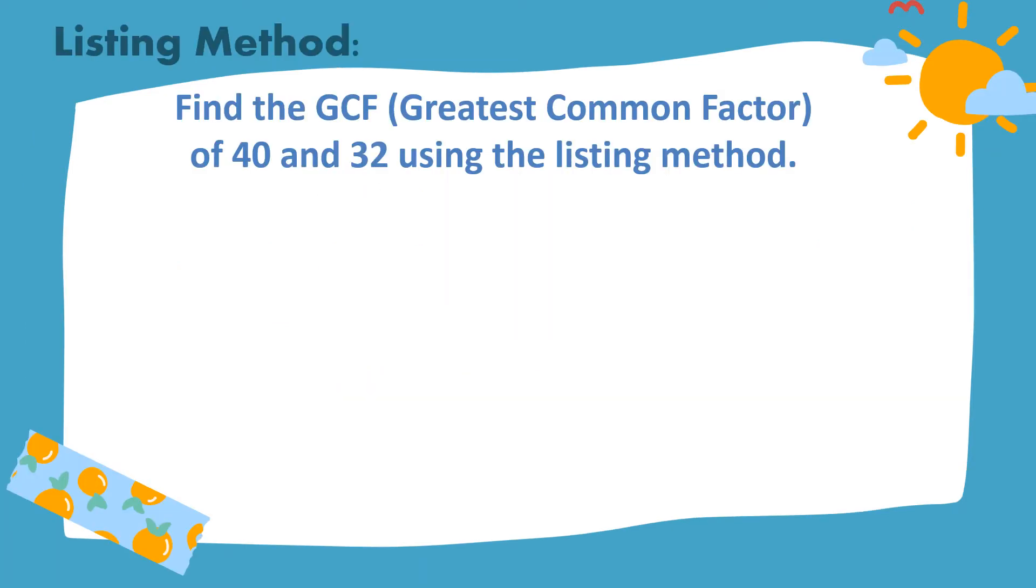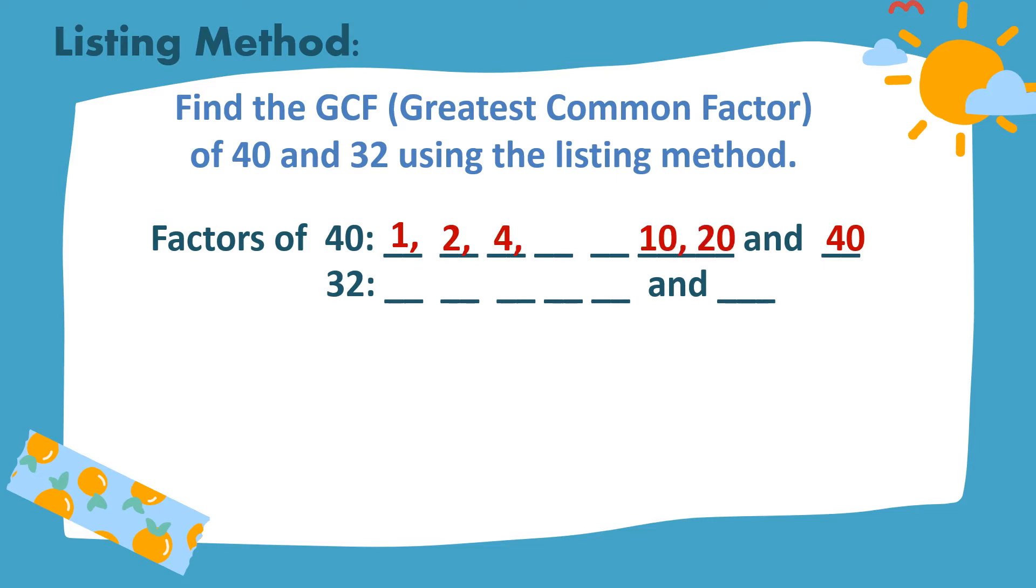Find the GCF or greatest common factor of 40 and 32 using the listing method. Factors of 40: We have 1 and 40, 2 and 20, 4 and 10, 5 and 8.